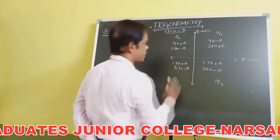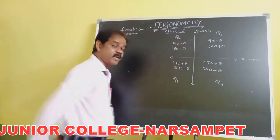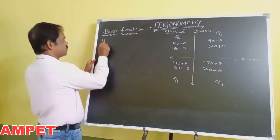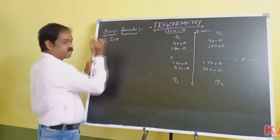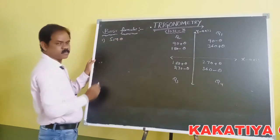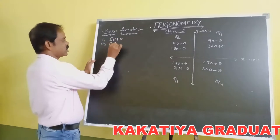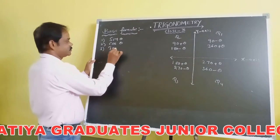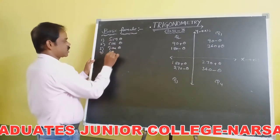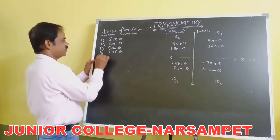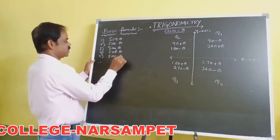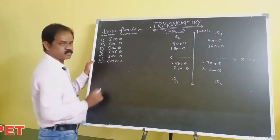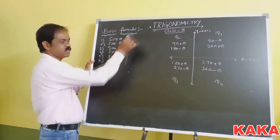In the first quadrant, how many trigonometric ratios are there? Six ratios. The first one is sin theta, the second is cos theta, the third is tan theta, the fourth is cot theta, the fifth is sec theta, and the sixth ratio is cosec theta. These are the six ratios in the trigonometry chapter.